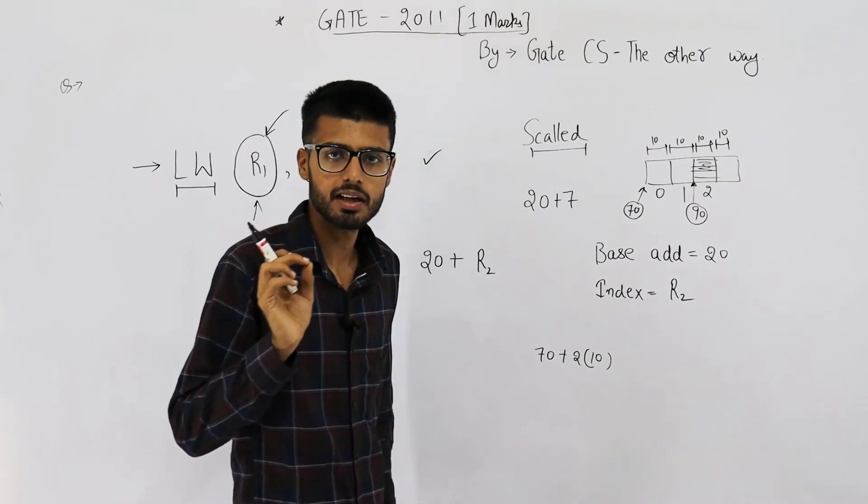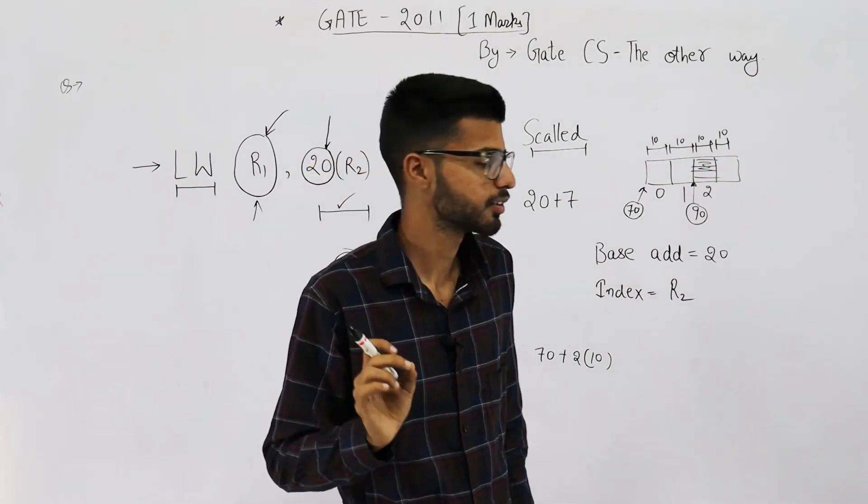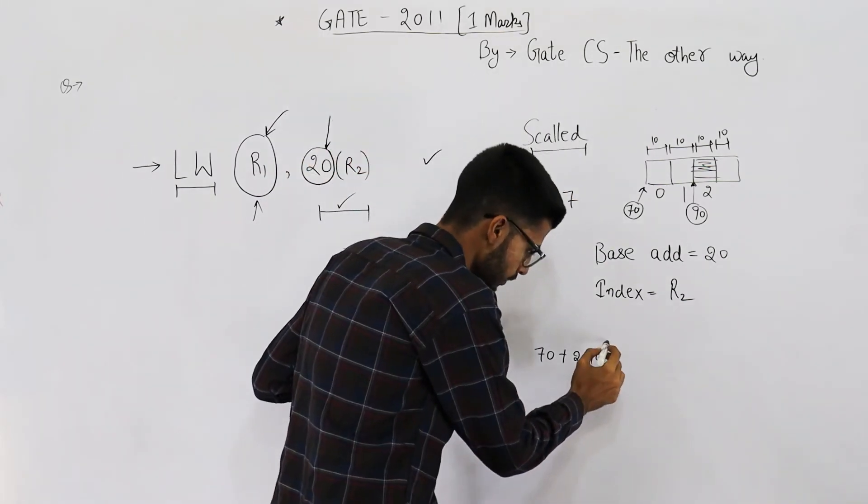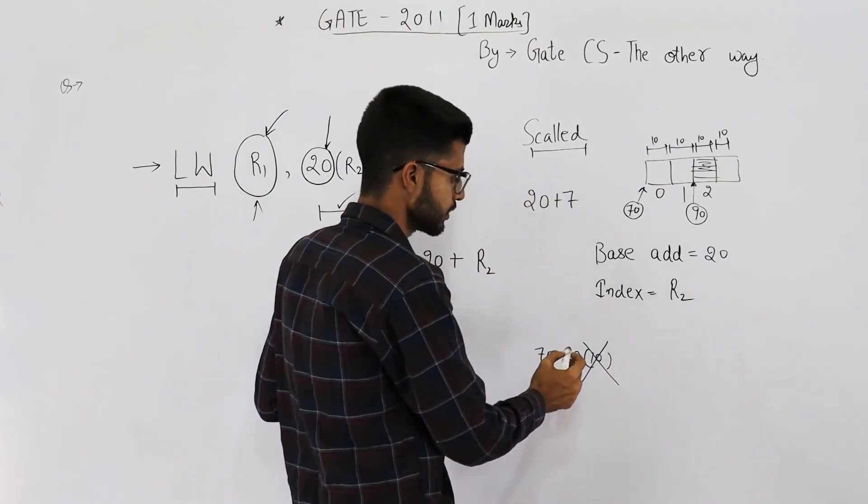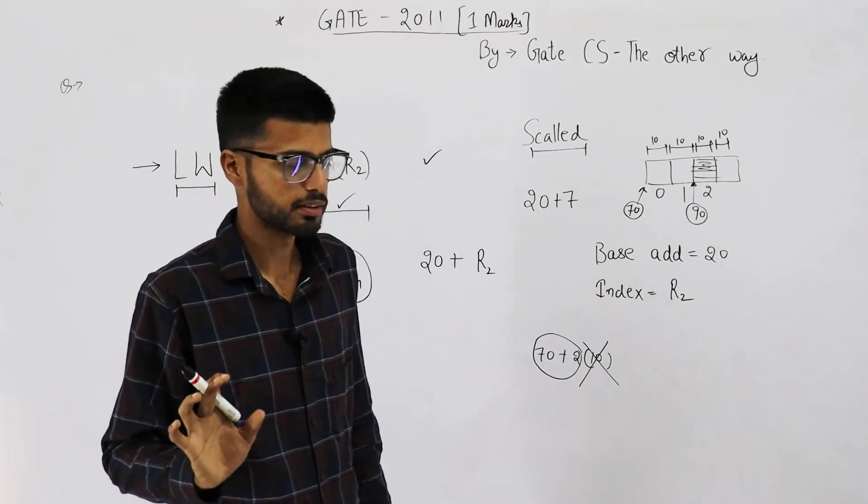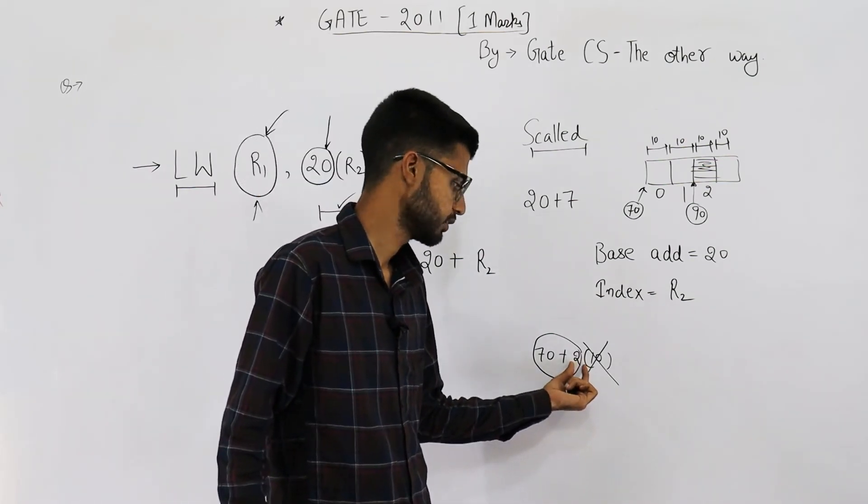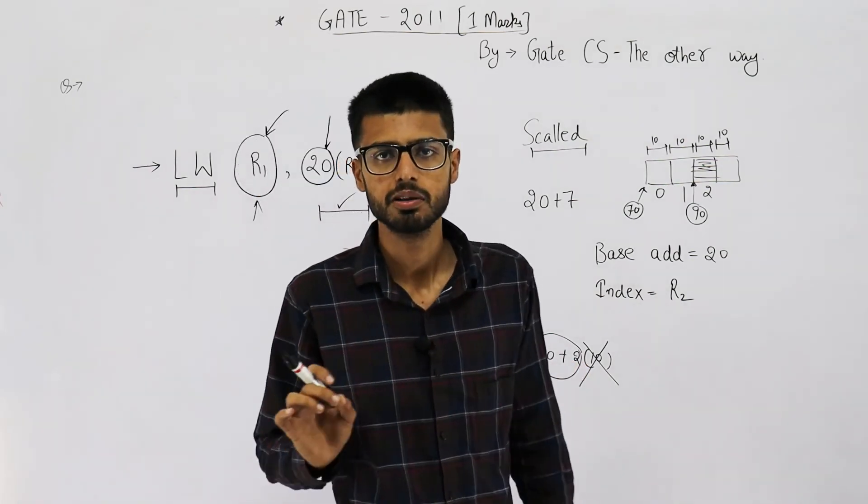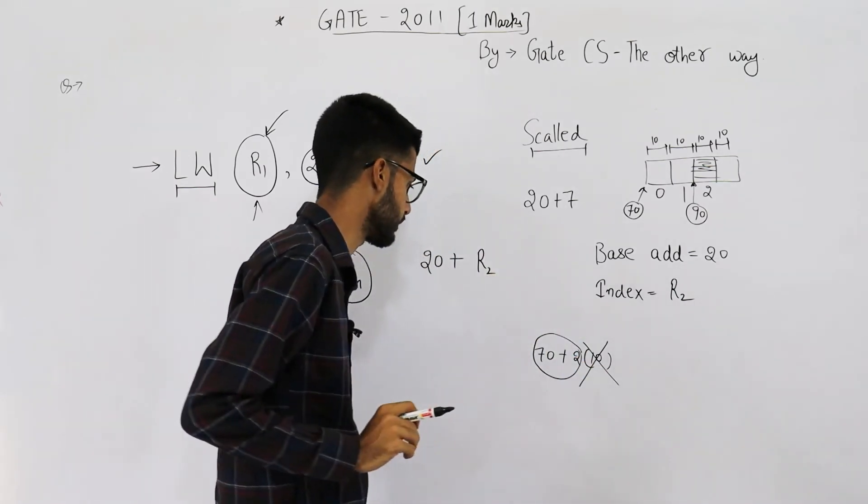But if we used scaled index, scaled addressing mode, then you need not do this multiplication. You just say 70 plus 2, this multiplication will be implicit. That means whatever index you have specified will automatically be multiplied by the scaling factor.